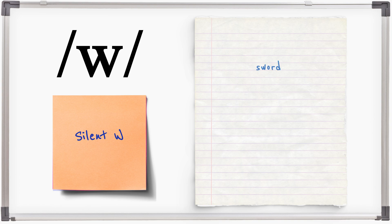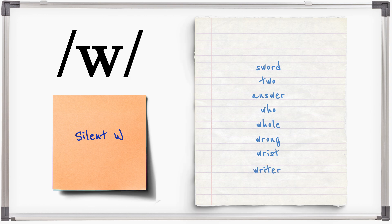W is silent in some words: sword, to answer, writer, who, whole. And in all words beginning W-R: wrong, wrist, writer.